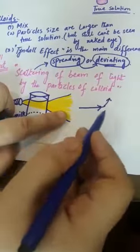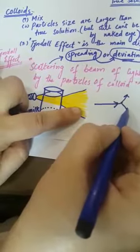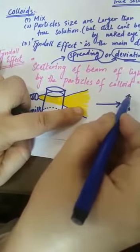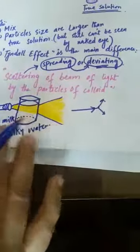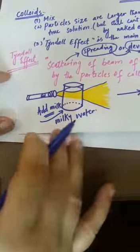This is the beam of light, its original path it will deviate. Means to say it will change its way, and this deviation of the path of the light is known as scattering.